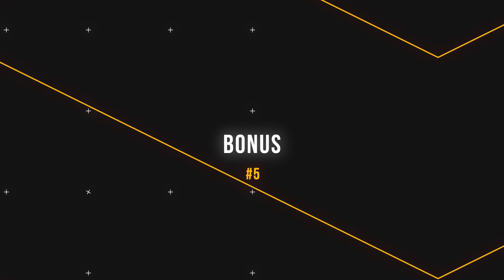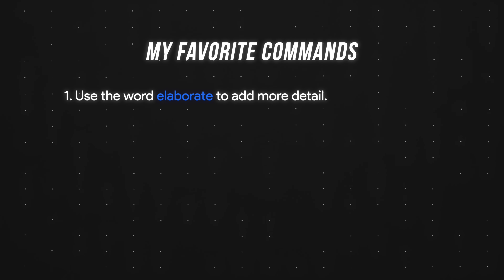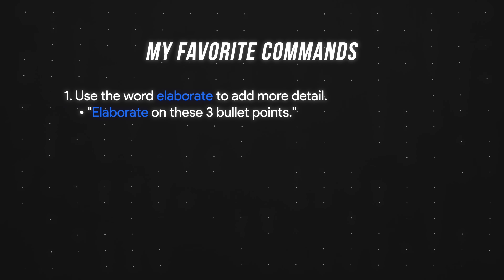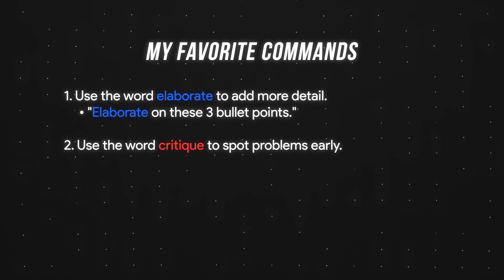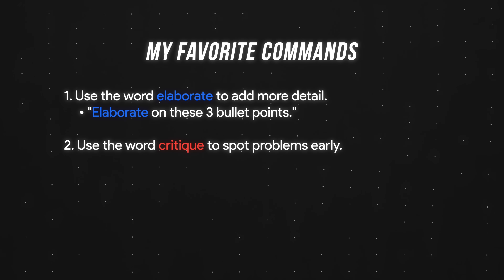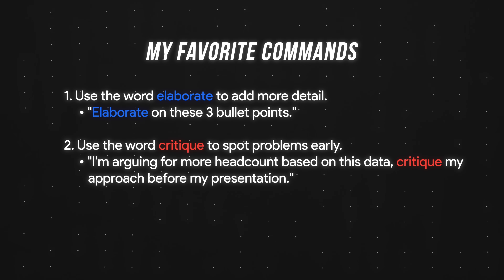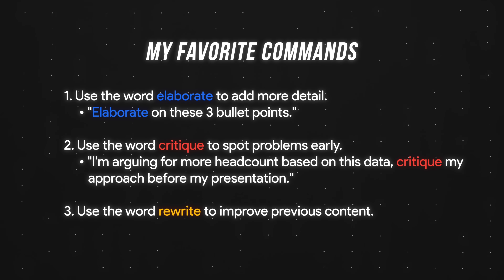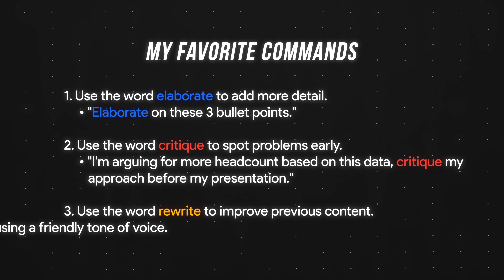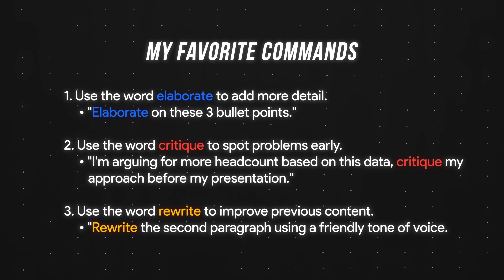As a bonus, here are three of my favorite commands for text-to-text models. First, use the word 'elaborate' to add more detail — for example, 'elaborate on these three bullet points.' Second, use the word 'critique' to spot problems early — for example, 'I'm arguing for more headcount based on this data; critique my approach before my presentation.' Third, use the word 'rewrite' to improve previous content — for example, 'rewrite the second paragraph using a friendly tone of voice.'